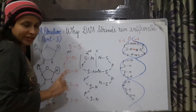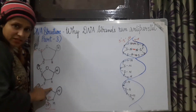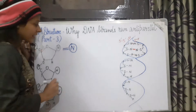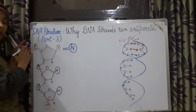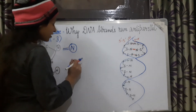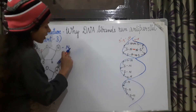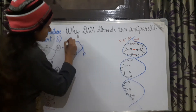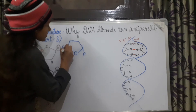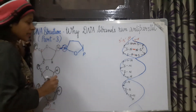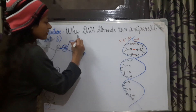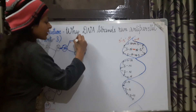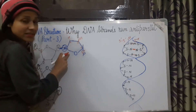Let us make the structure of the second polynucleotide chain, that is the second strand of DNA. Here is our nitrogenous base, and we can label the carbons: first carbon, second, third, fourth, and the fifth carbon where the phosphate group is attached. The third carbon has a hydroxyl group. This is the nucleotide structure.